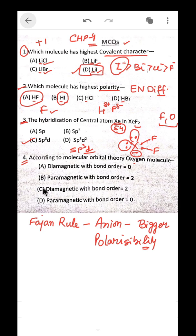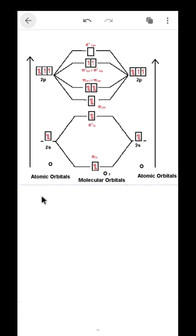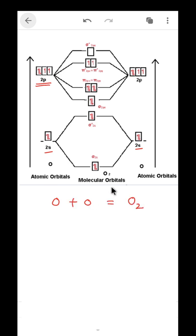Question 4: according to molecular orbital theory, what is the nature of the oxygen molecule? First, let's look at the molecular orbital diagram for O2. We consider the 2s case since the 1s electrons are complete like a noble gas configuration. Two oxygen atoms combine to form the oxygen molecule.